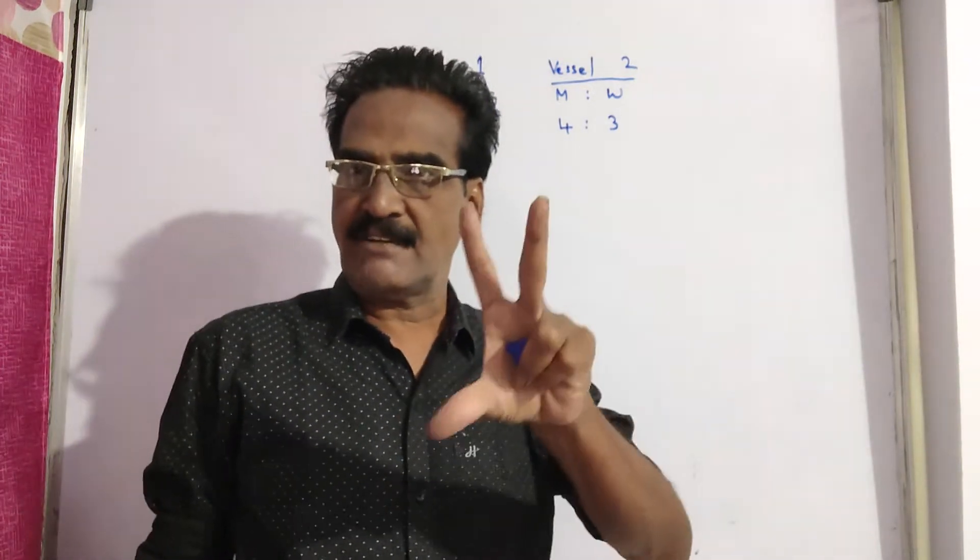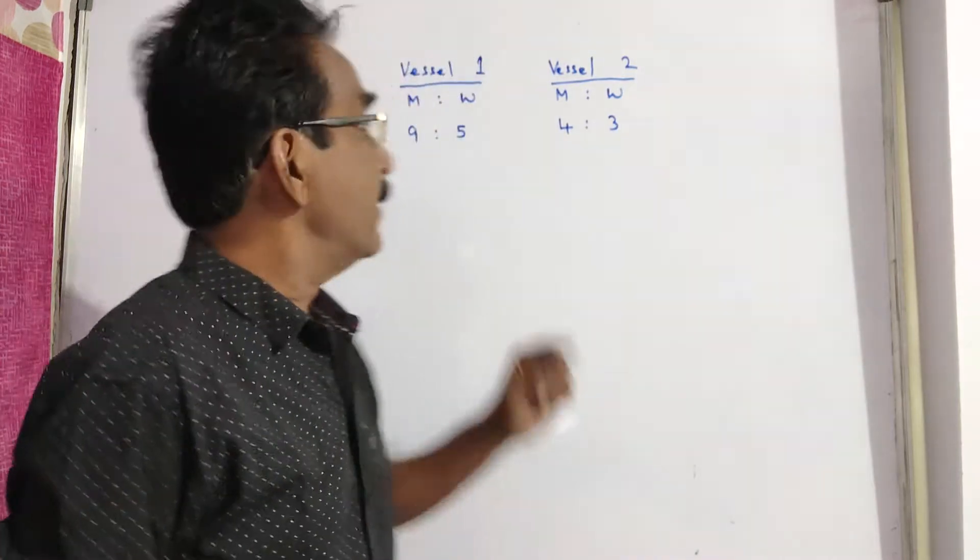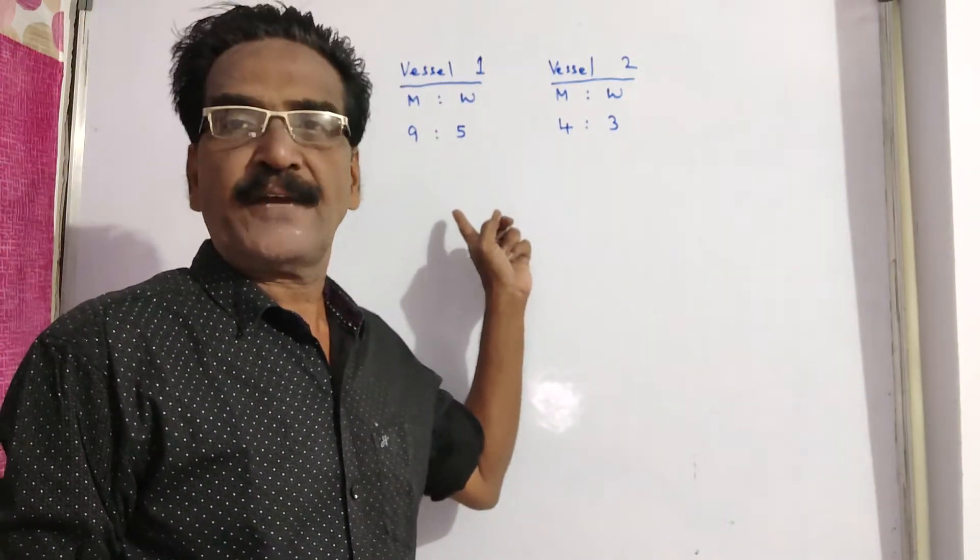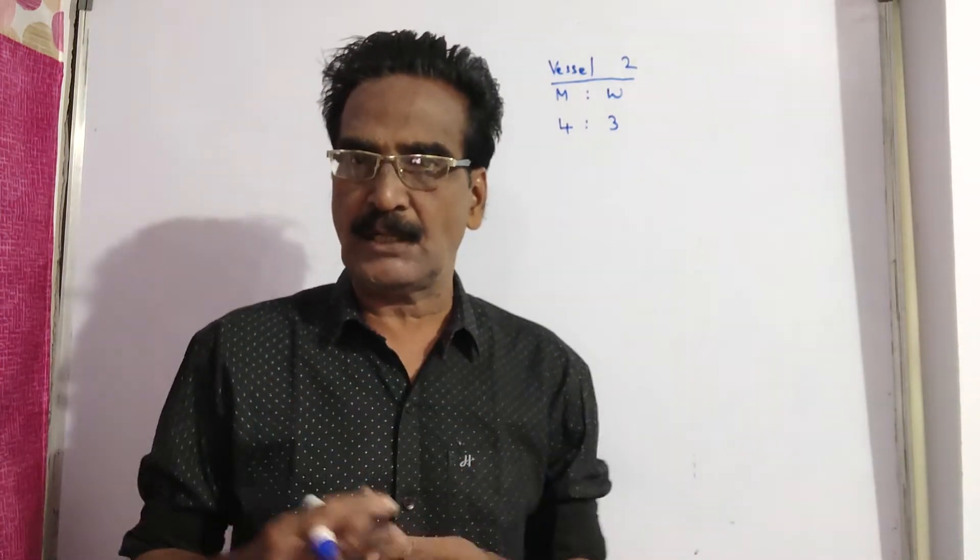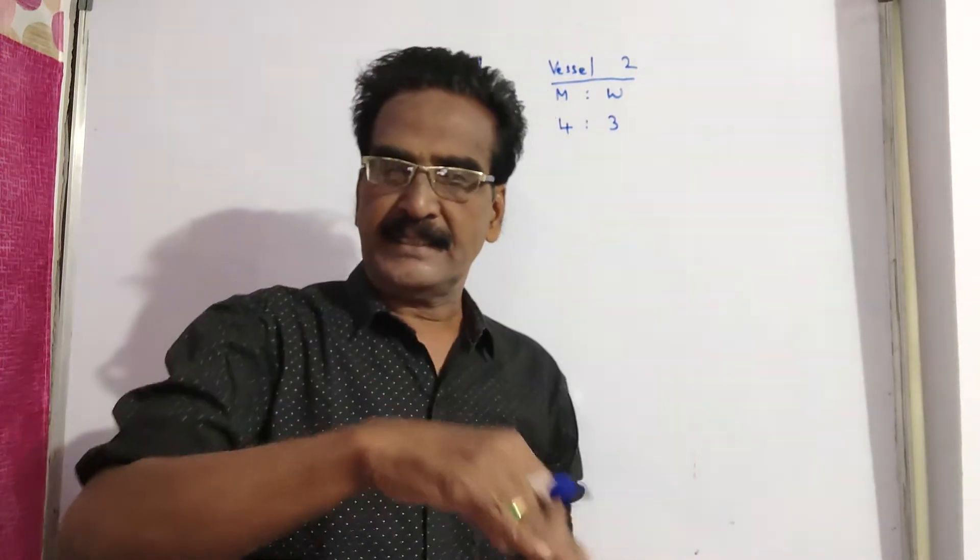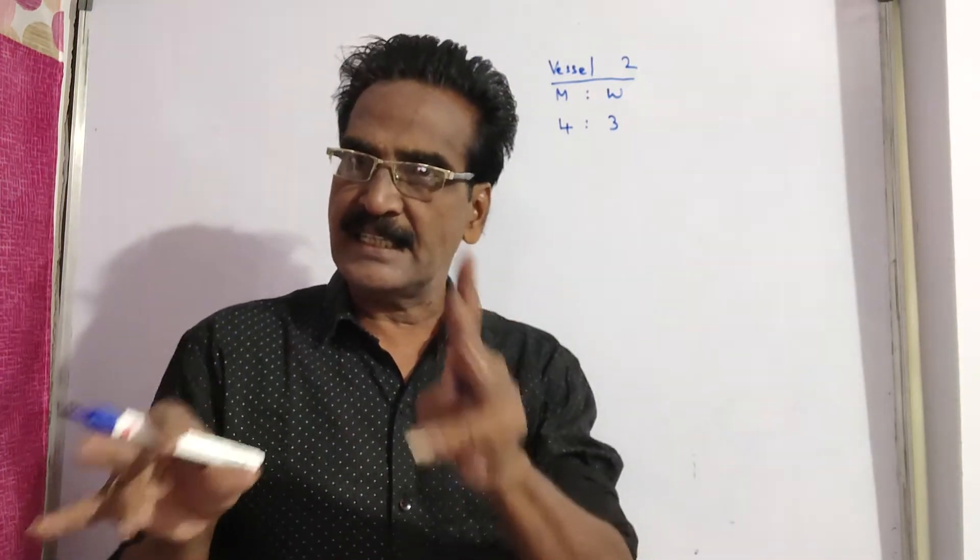See friends, two vessels of equal quantity contain mixtures of milk and water in the ratio 9 is to 5 and 4 is to 3 respectively. If these two mixtures are mixed thoroughly and poured into a third vessel, what is the ratio of milk and water in the third vessel?